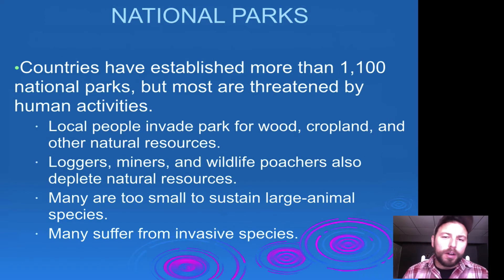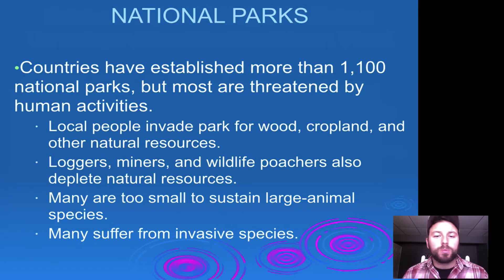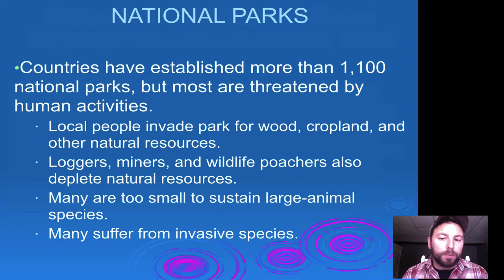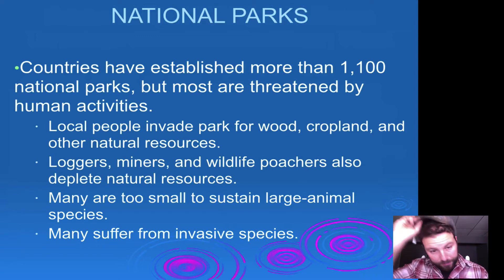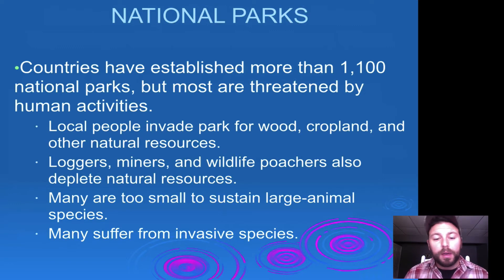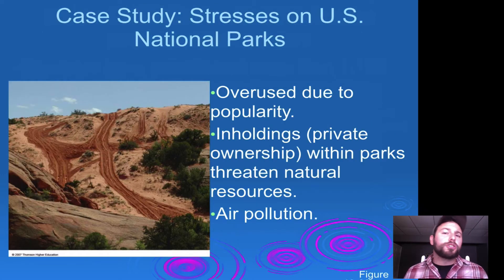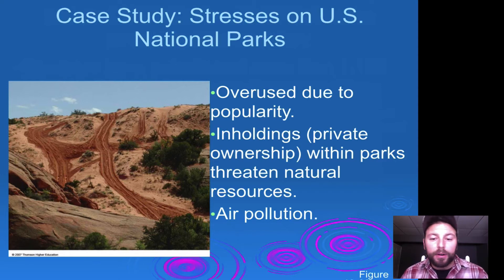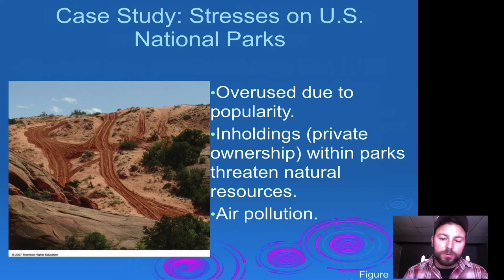Moving into national parks: the United States is lucky to have about 1,100 national parks, but they are threatened by human activity. Local people may invade for poaching or resource removal. Many parks are too small to sustain large animal species, and many suffer from invasive species. They're overused due to popularity, and some contain private in-holdings within park boundaries which may threaten natural resources.